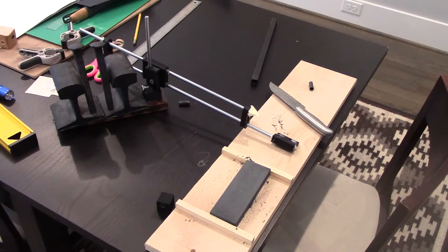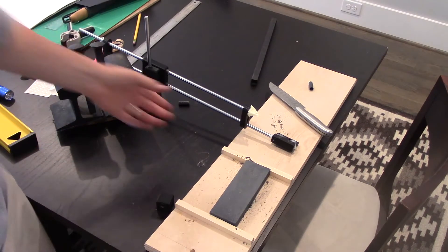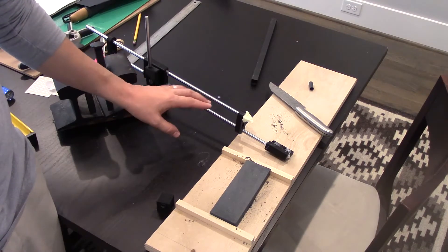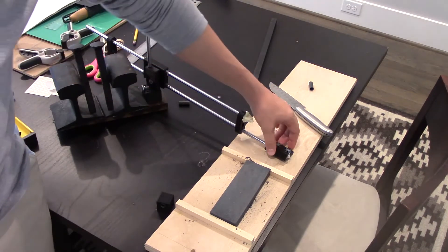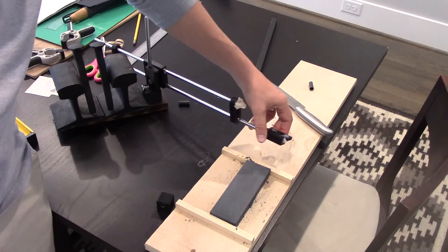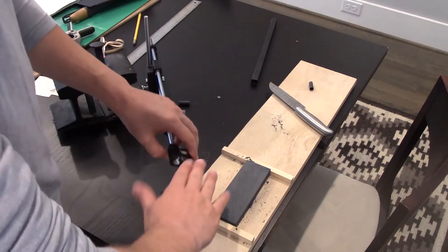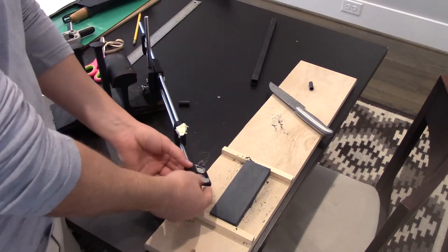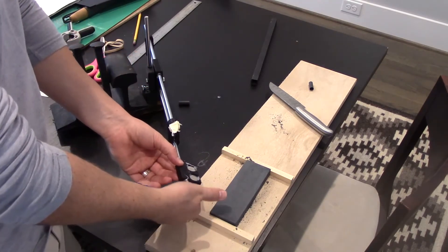All right, here are some improvements I've made since the last design iteration. You can see that there are two rods here now. The reason for that is to prevent it from rotating in this axis.